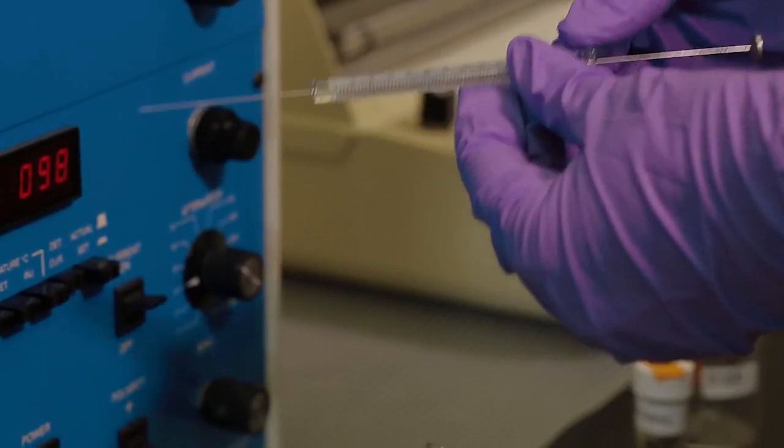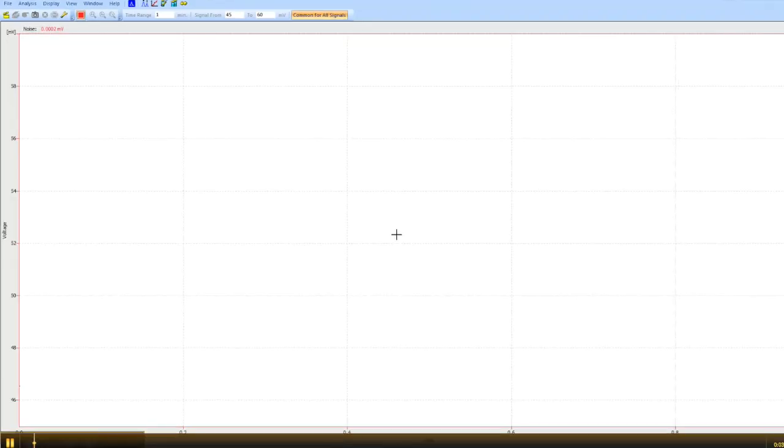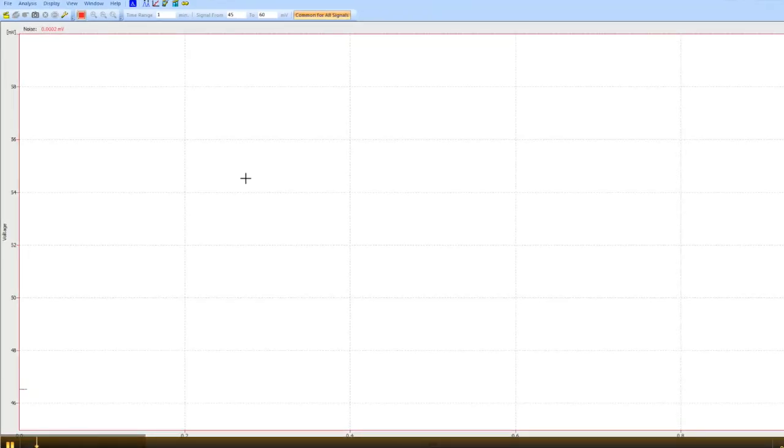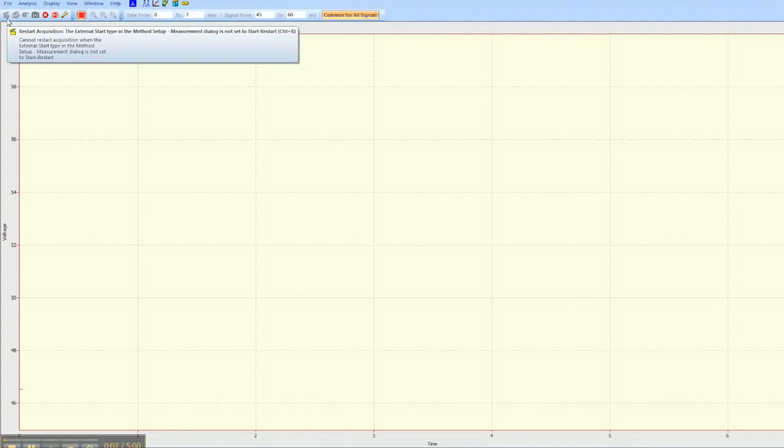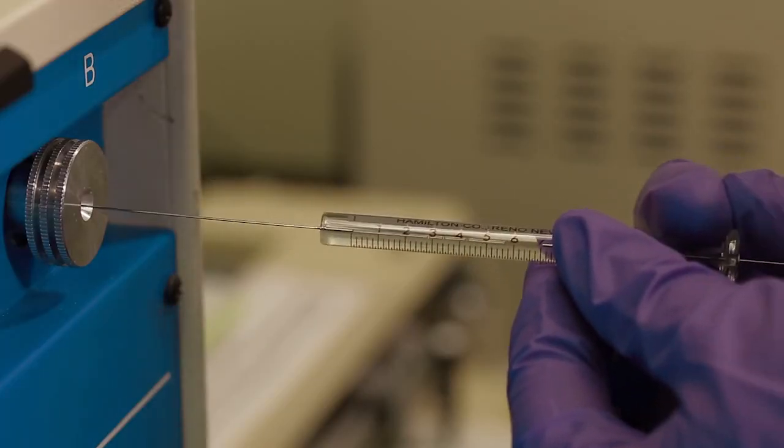Once the sample is loaded into the syringe, click the Data Acquisition button to open the Data Acquisition screen and click the Run Acquisition button on the top left corner of the screen. Now you can insert the needle into the GC injection port.